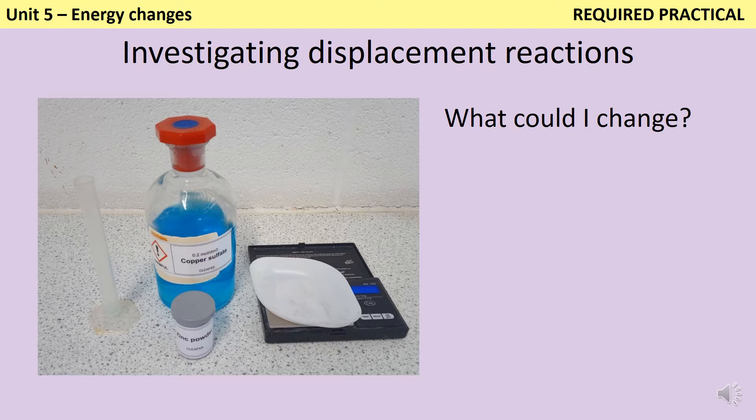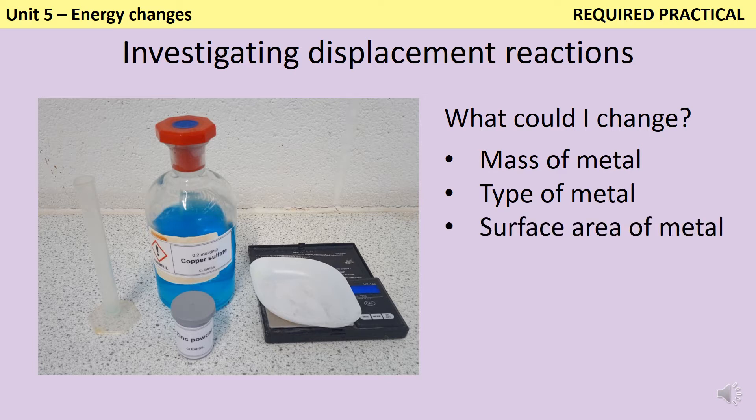There are a number of things that I could change in this practical: the mass of the metal that I'm adding, the type of the metal that I'm adding, the surface area of that metal, so whether I use a really fine powder or big chunks of it, the volume of the copper sulfate, and also the concentration of the copper sulfate.